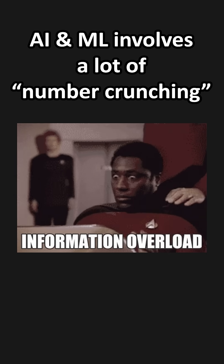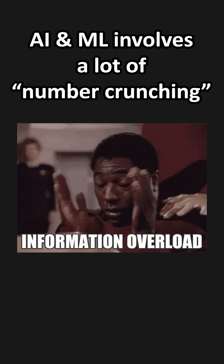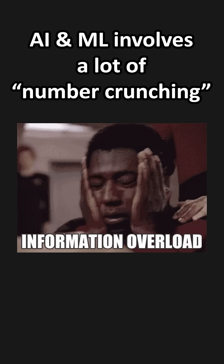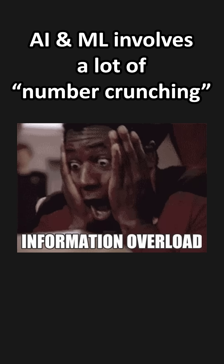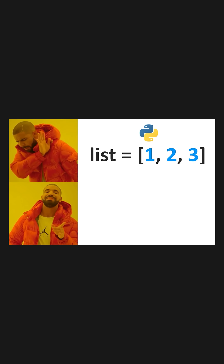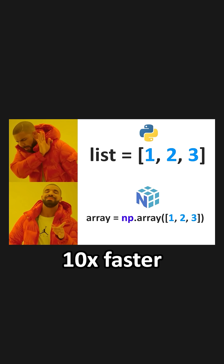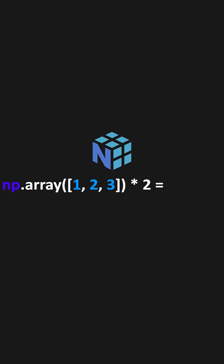With AI and machine learning, you're often working with massive datasets and you need to do a lot of number crunching. Plain Python lists? Not gonna cut it. NumPy gives us access to NumPy arrays, which are faster than native Python lists. Plus with NumPy arrays, we can perform vectorized operations.